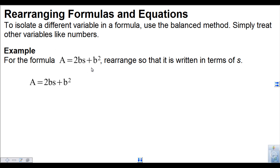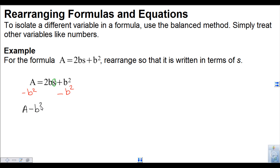Here's the formula for the surface area of a square-based pyramid. We're going to rearrange it so that it's written in terms of S — in other words, we're going to isolate S. I notice there's a plus B squared. When solving an equation, the first thing we want to get rid of is any number that is adding or subtracting with the variable. So I'm going to get rid of this plus B squared first by doing the opposite operation — minus B squared — on both sides. Because I don't know what A or B squared is, I just rewrite them beside each other.